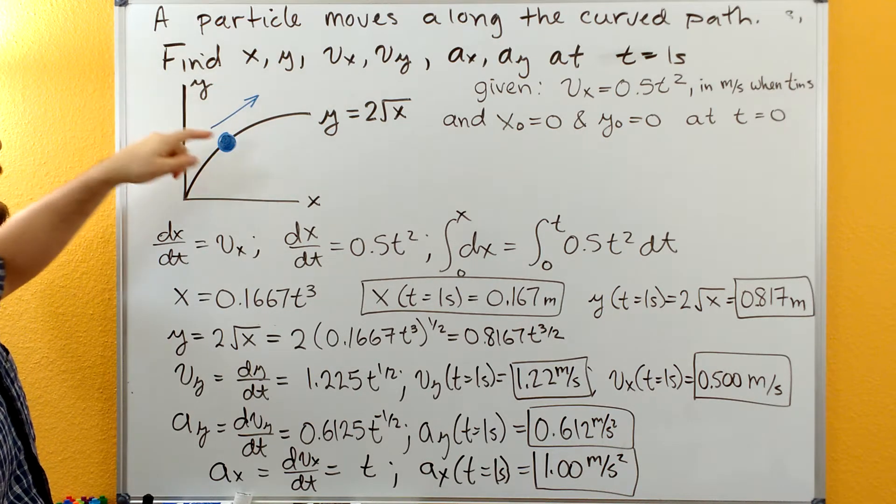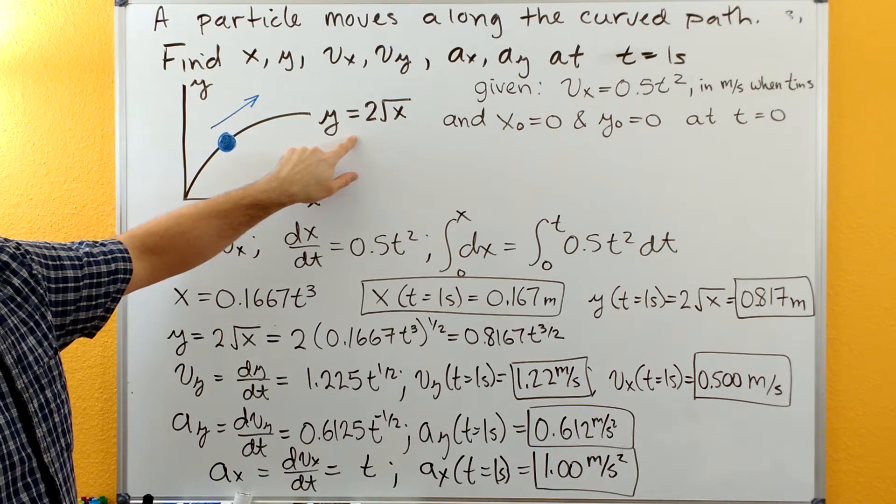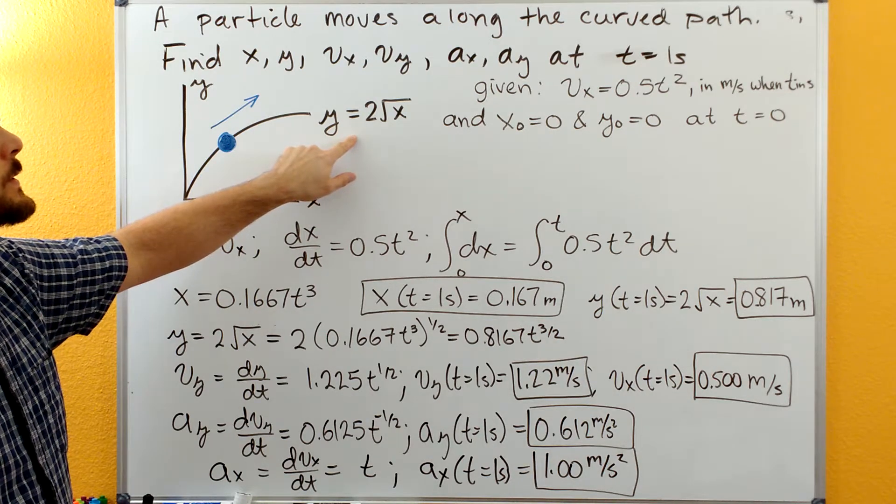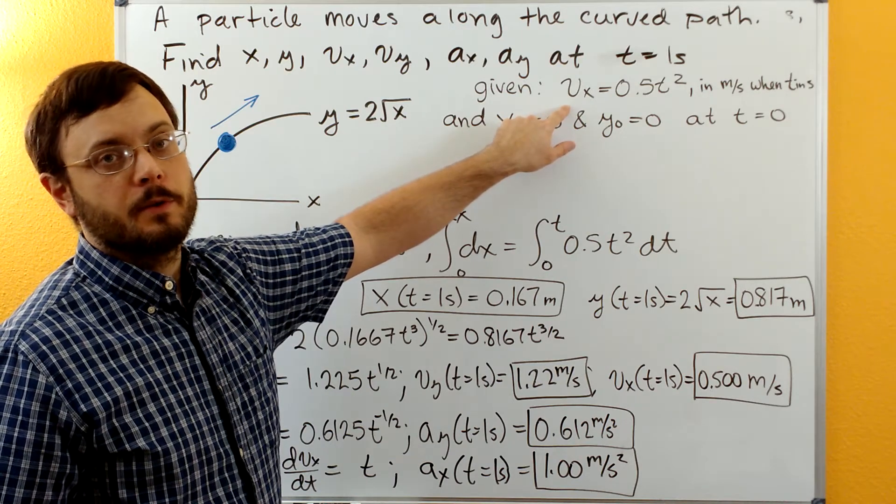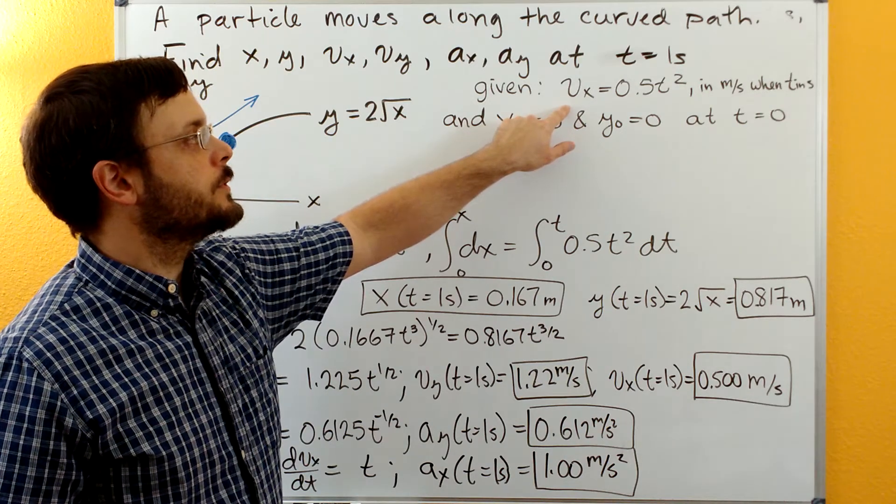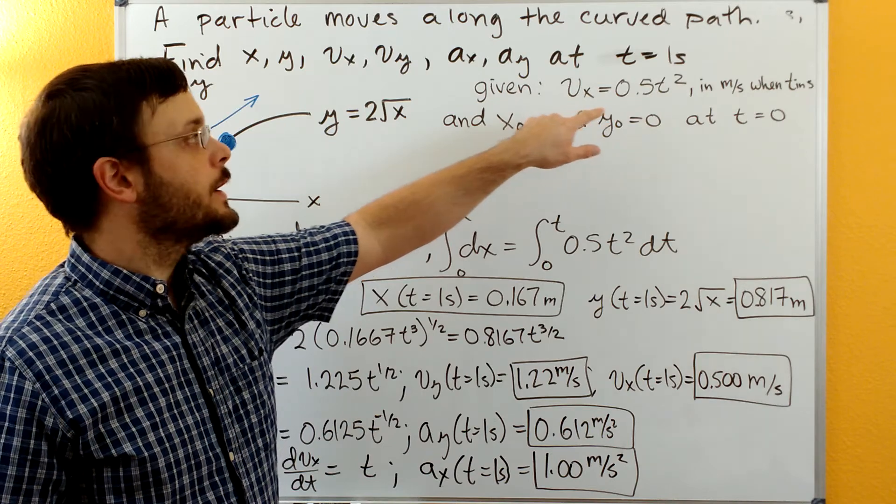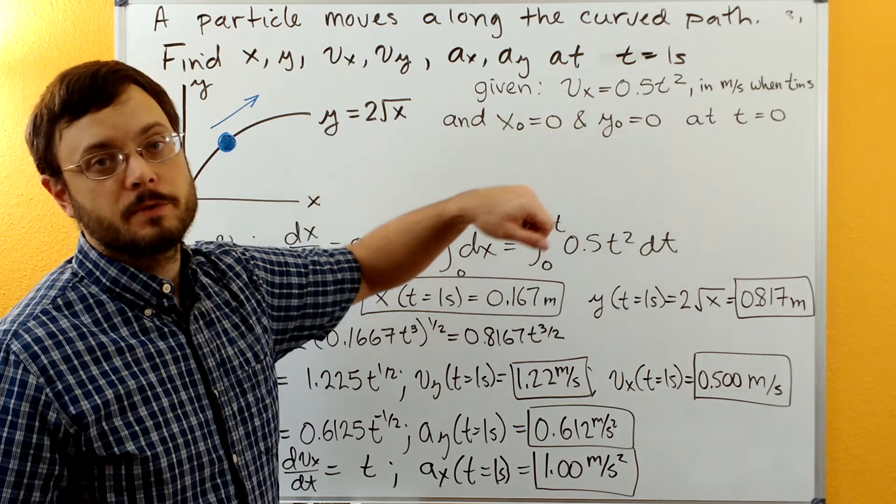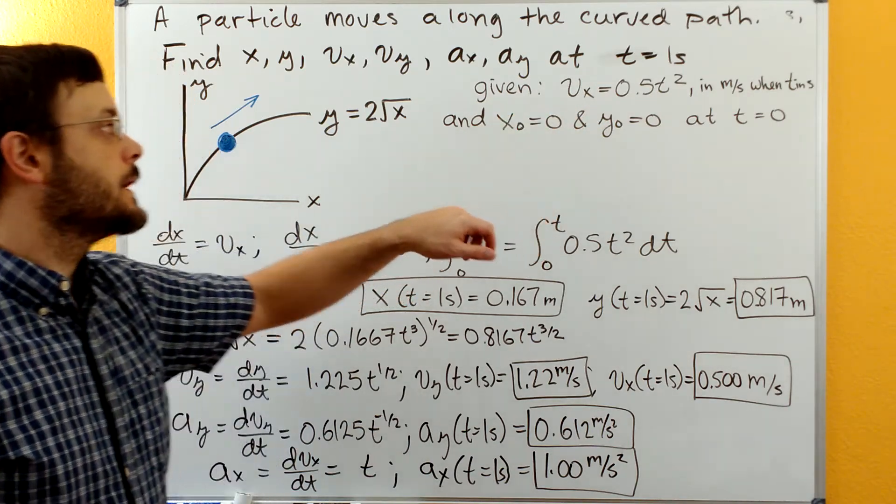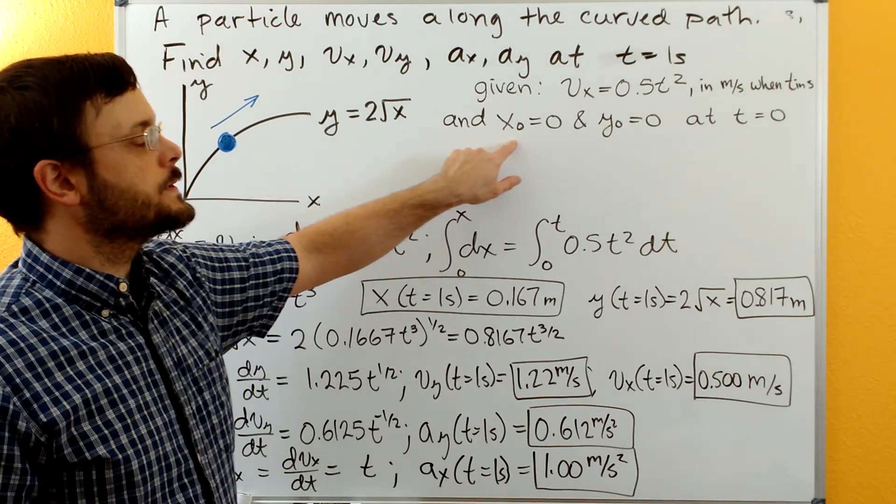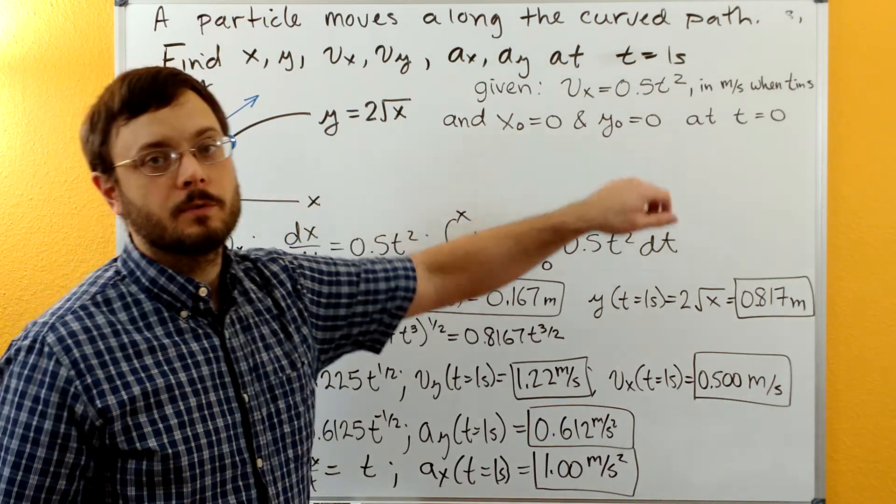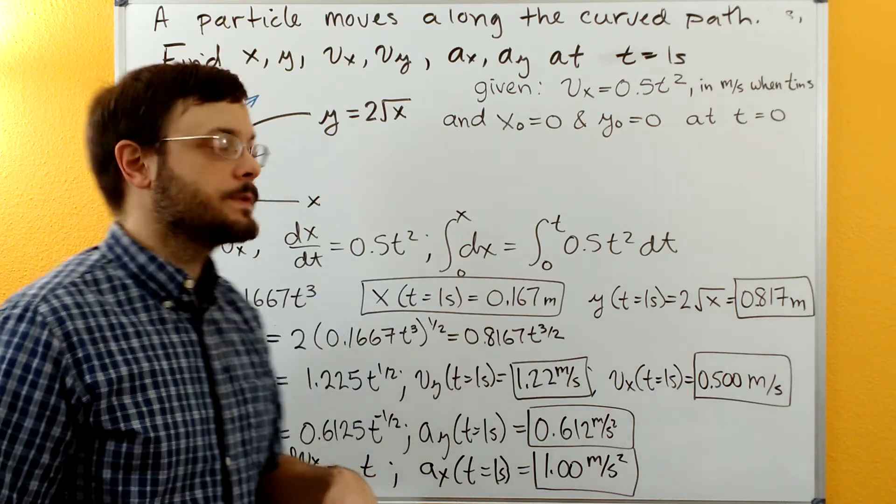We have this information that the curve y equals 2 times the square root of x. And we have information that the x component of the velocity is 0.5 times t squared, where velocity is in meters per second when t is in seconds. We have these initial conditions that x equals 0 and y equals 0 at t equals 0.